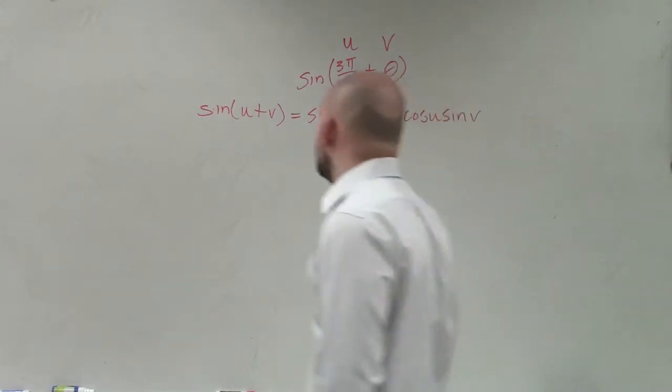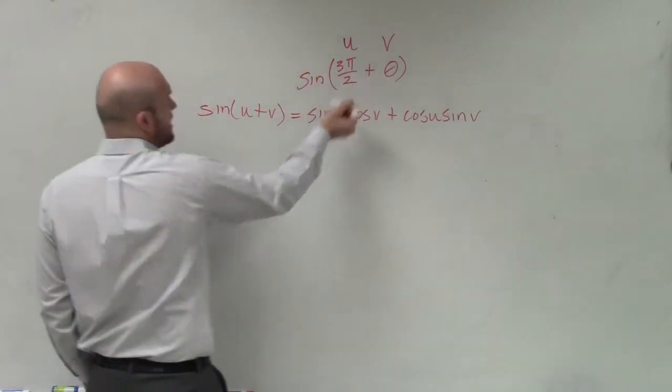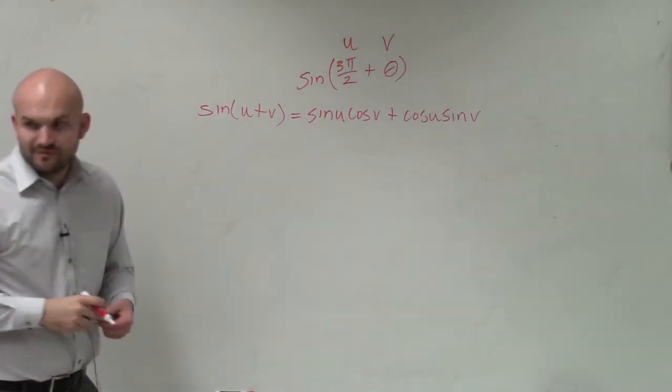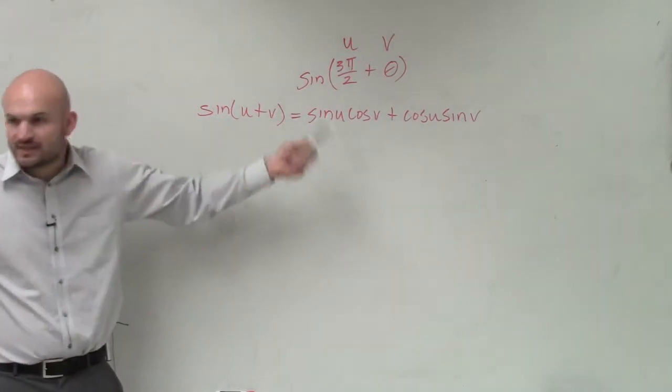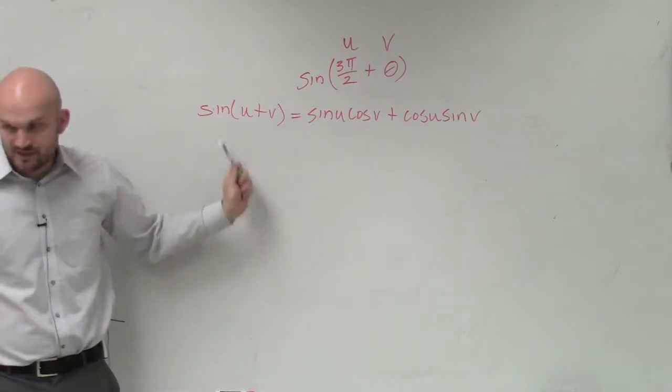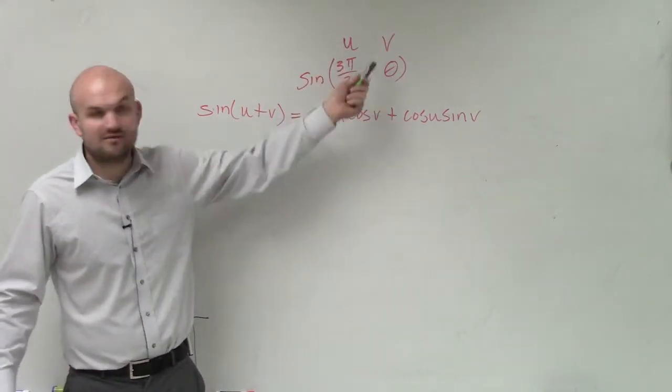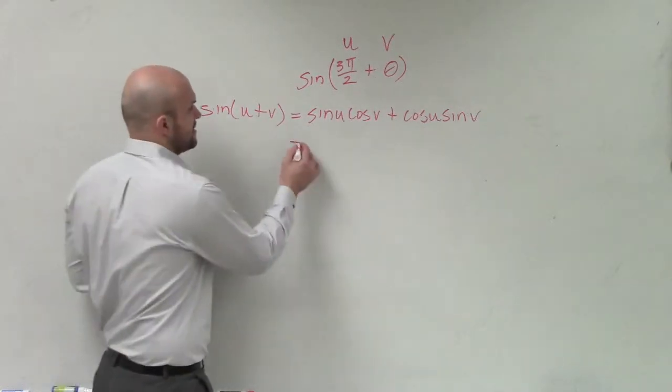So the next thing that I do now is if I know u is 3π over 2 and v is θ, now I just plug those in for u and v. That's really all we did last class period. You're given this formula, you're given a problem like this, and you just plug in u and v into your problem. It's really basic, isn't it?